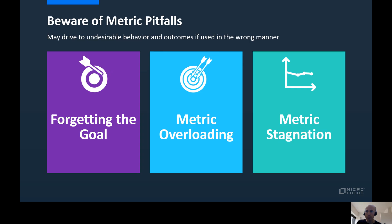Keep in mind, a metric is a great vehicle to drive a change in behavior. However, using metrics in the wrong manner may drive undesirable behavior and outcomes. Some common pitfalls include putting a number without the context, which may cause people to de-emphasize and forget the actual objectives and goals behind the numbers. Overloading a metric with multiple purposes, such as measuring people performance, may drive people to find creative ways to manipulate the system. And keeping metrics that were already achieved due to past decisions can defocus, add overhead, and drive stagnation.